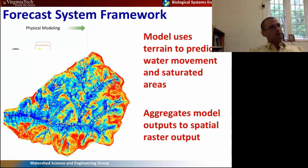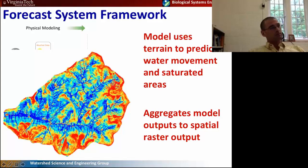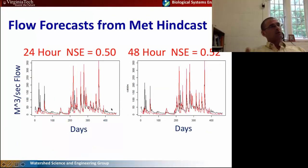This is what our terrain map looks like that we use to drive water movement across the watershed. Basically, the blue areas are much more likely to be saturated and produce runoff, whereas the red areas are much less likely to be saturated and produce runoff. Similar to Tony's approach, these saturated areas tend to be in near-stream areas or areas with really shallow soil or shallow slopes where water can't drain out of the soil profile and tends to saturate.